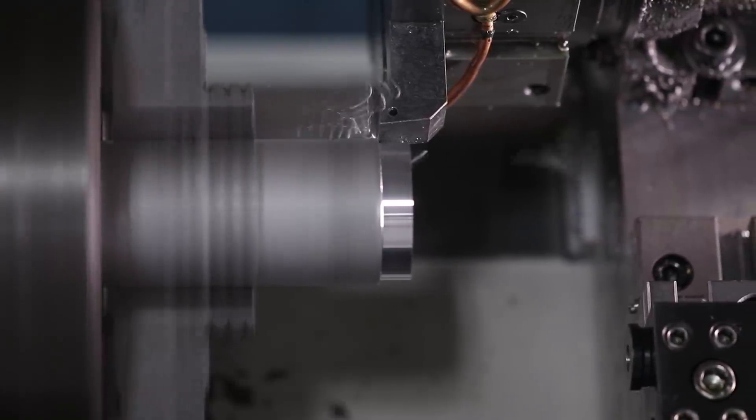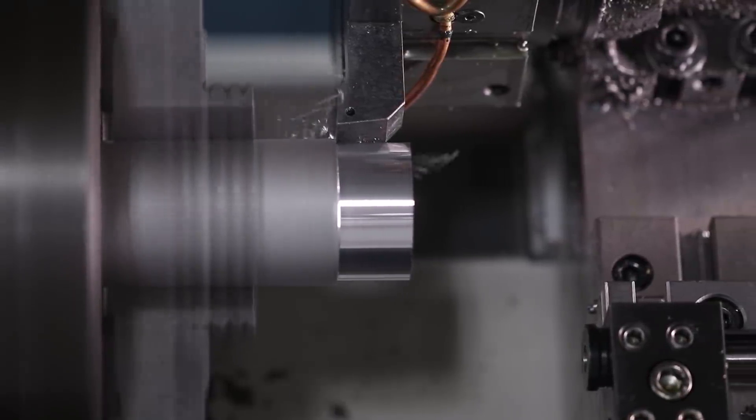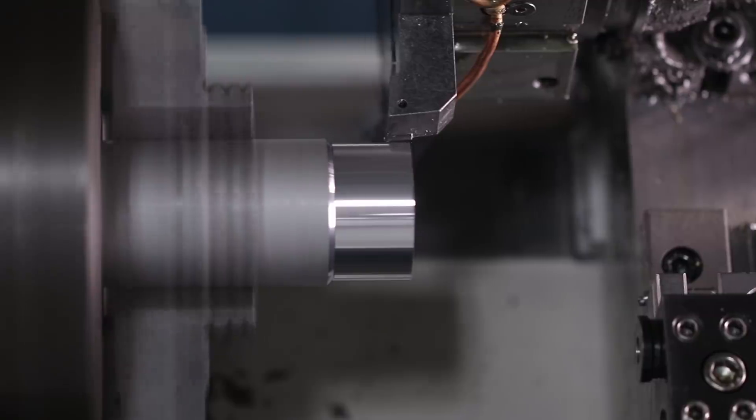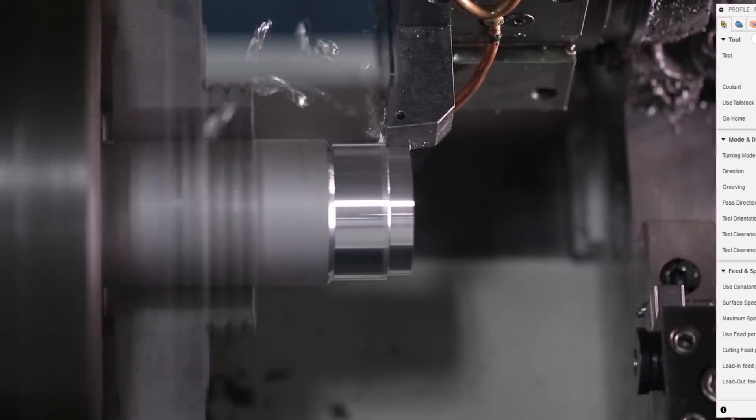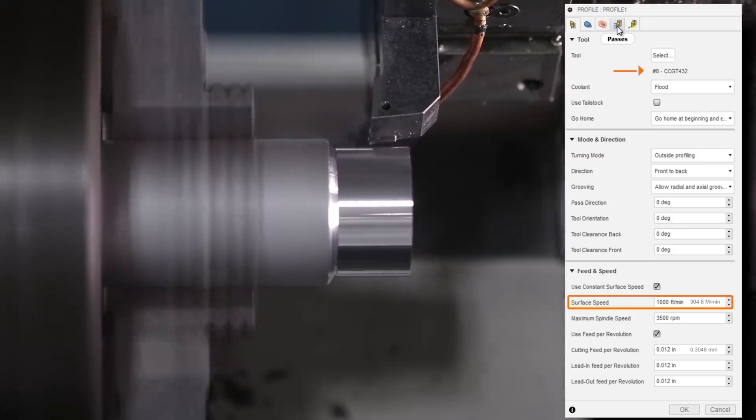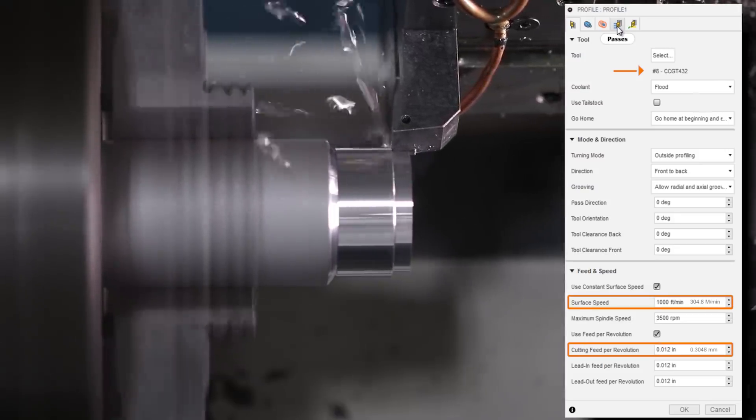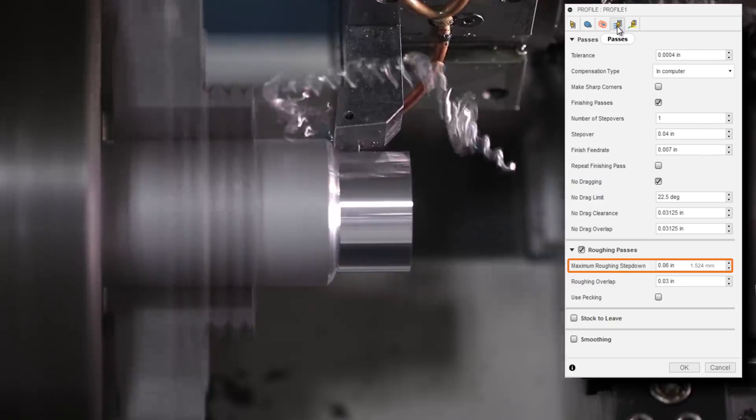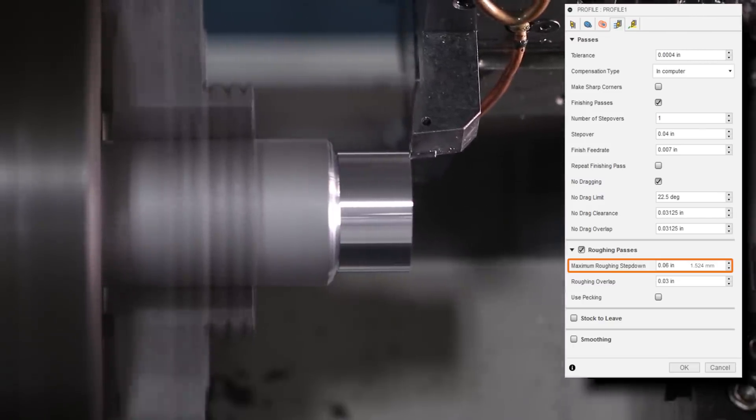Same insert. Here we're running the right speeds and feeds to break that chip to run a better operation and a safer operation. TCMT 432 insert, we're running at 1,000 surface feet per minute, 12 thou feed per rev, and 60 thou depth of cut or maximum roughing step down.